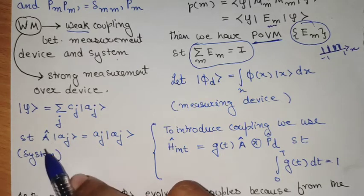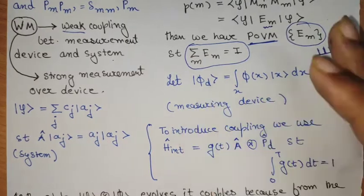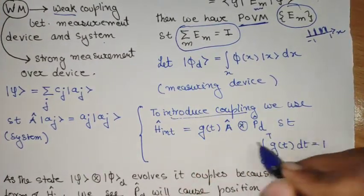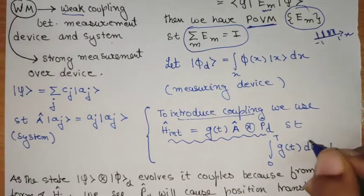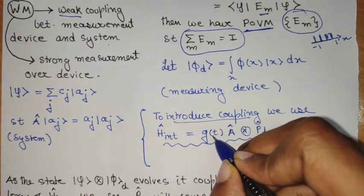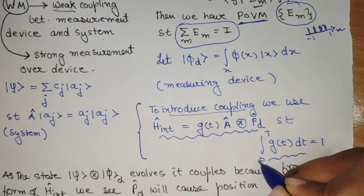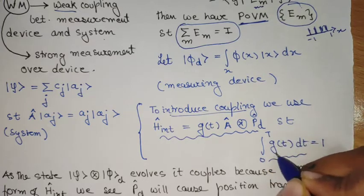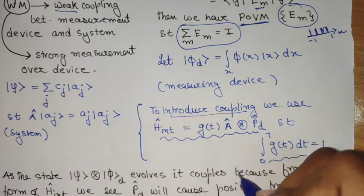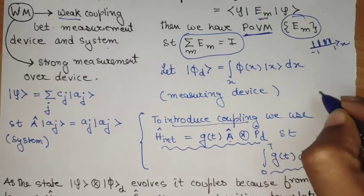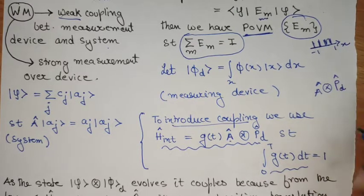The system state is a superposition of different eigenstates of the operator A, which is an observable of this system, and this is the eigenvalue relation of that operator. Now we introduce the coupling via an interaction Hamiltonian of this form. The interaction Hamiltonian has a kind of an impulse coupling. This coupling occurs between time 0 to t, and the strength of the coupling is governed by g(t). Along with this coupling g(t), we have the operator A tensor product with the momentum operator of the device.